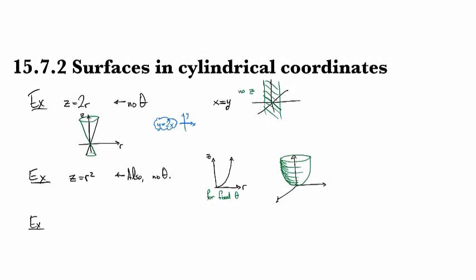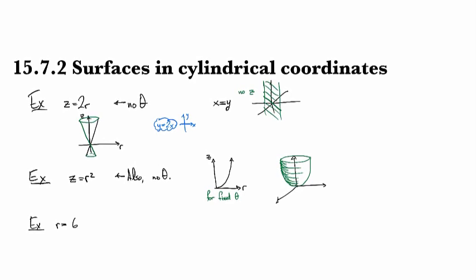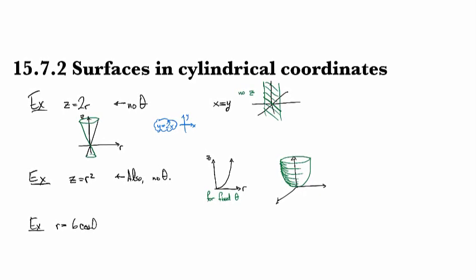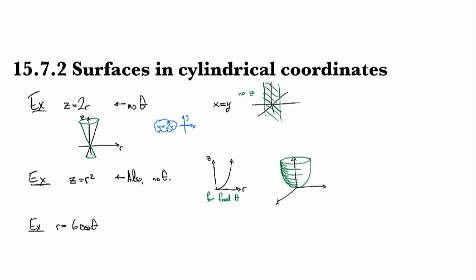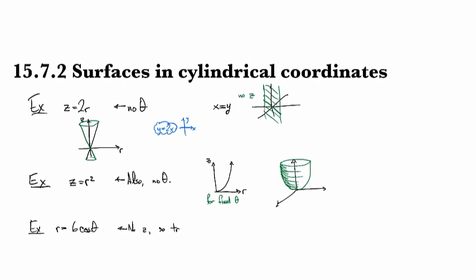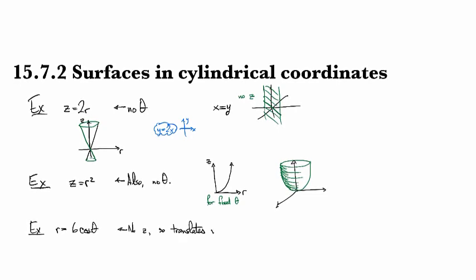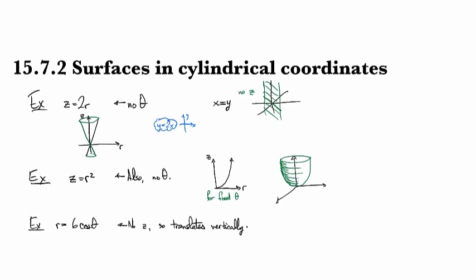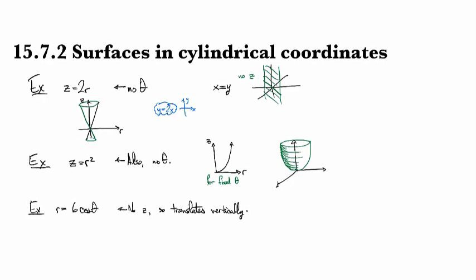Suppose we have r equals 6 cosine theta. Now this one has no z. That means instead of being something rotationally symmetric, it translates vertically. The underlying idea is that no matter what z value you fix, that horizontal trace would look the same.